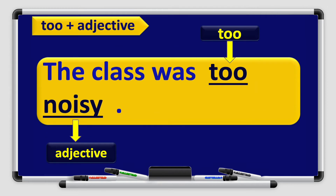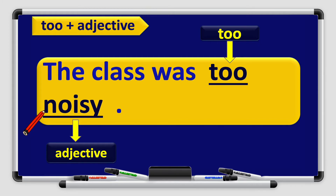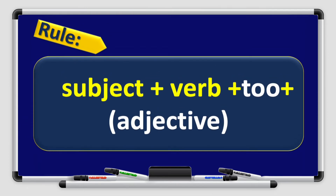Alright boys and girls, we have here the word 'too' plus adjective. Let's see this example: The class was too noisy. The word 'too' here tells us that this class is full of noise. 'Noisy' is the adjective and it tells us that the class is too noisy, so noisy describes the class. Our rule is: subject plus verb plus 'too' plus adjective.